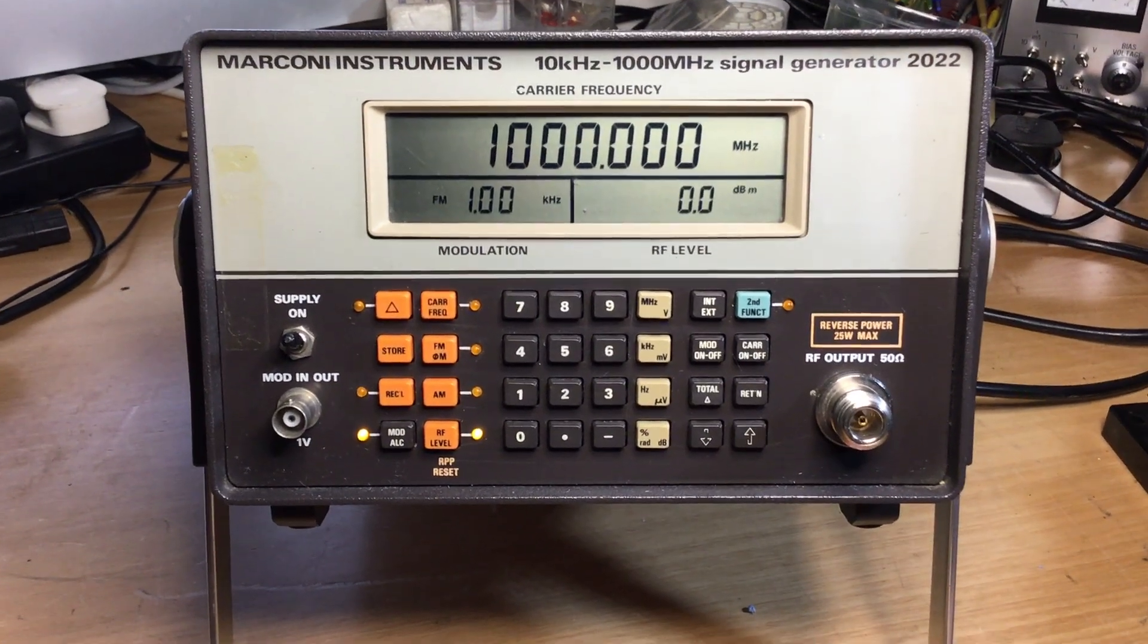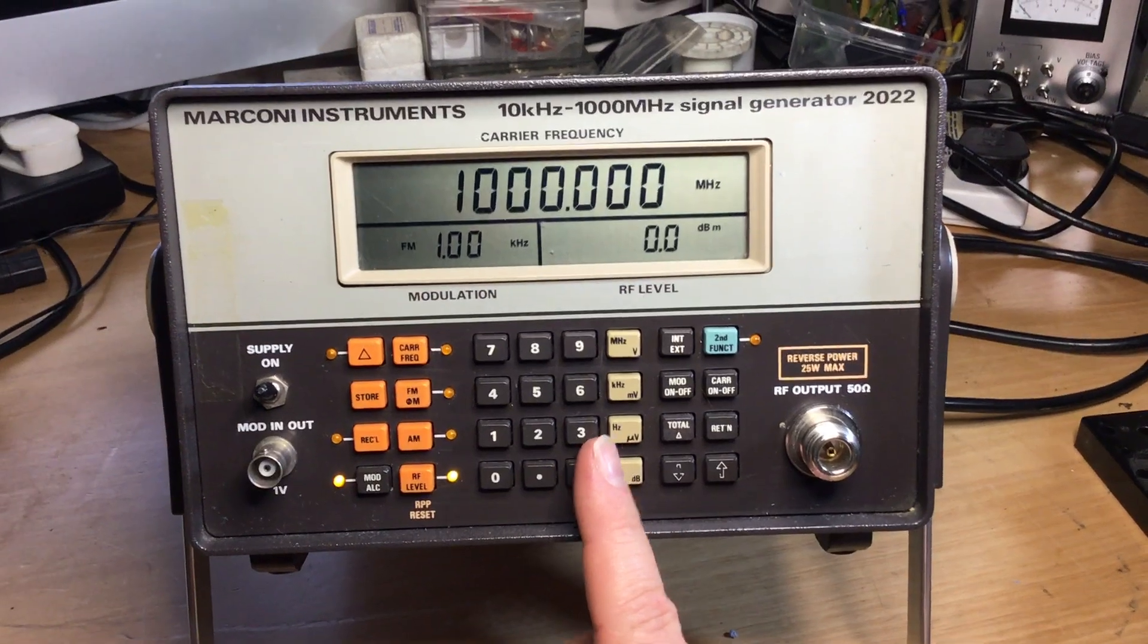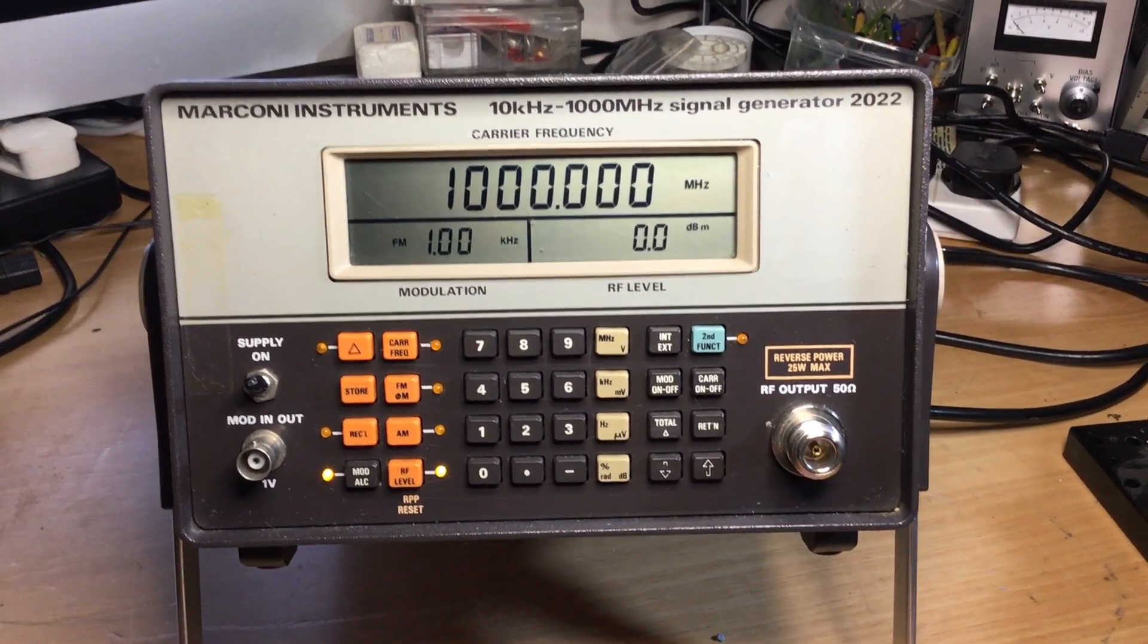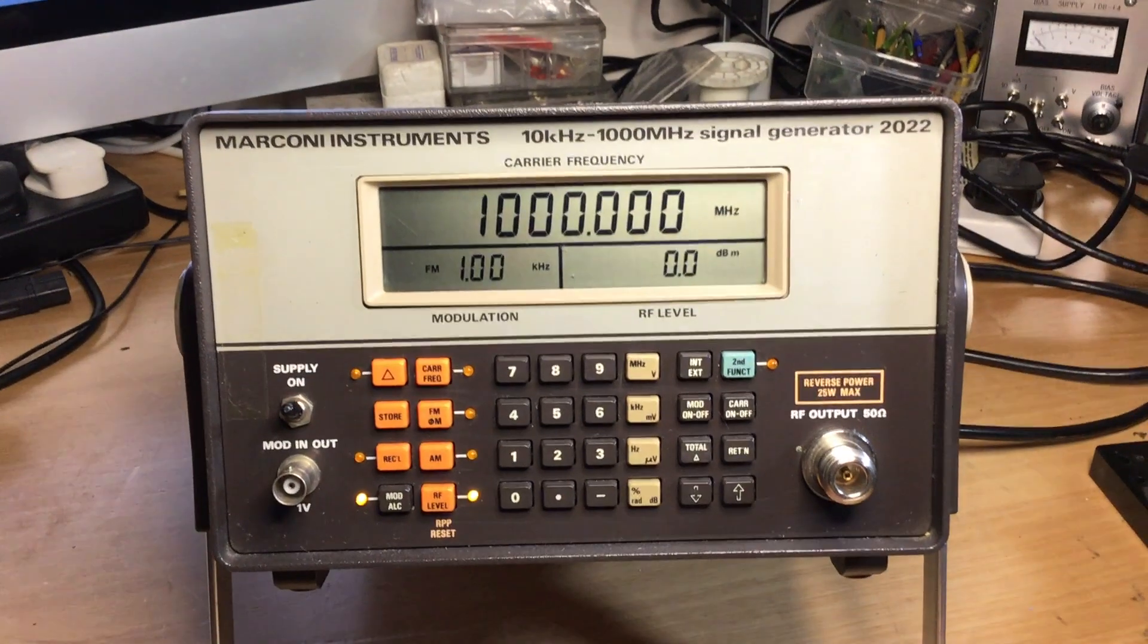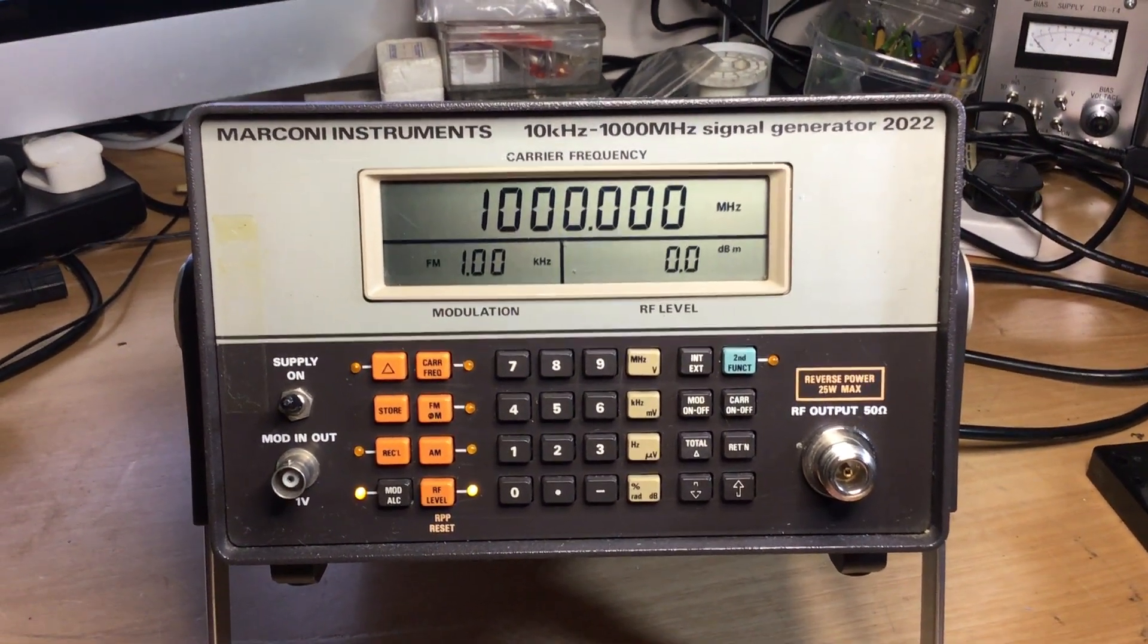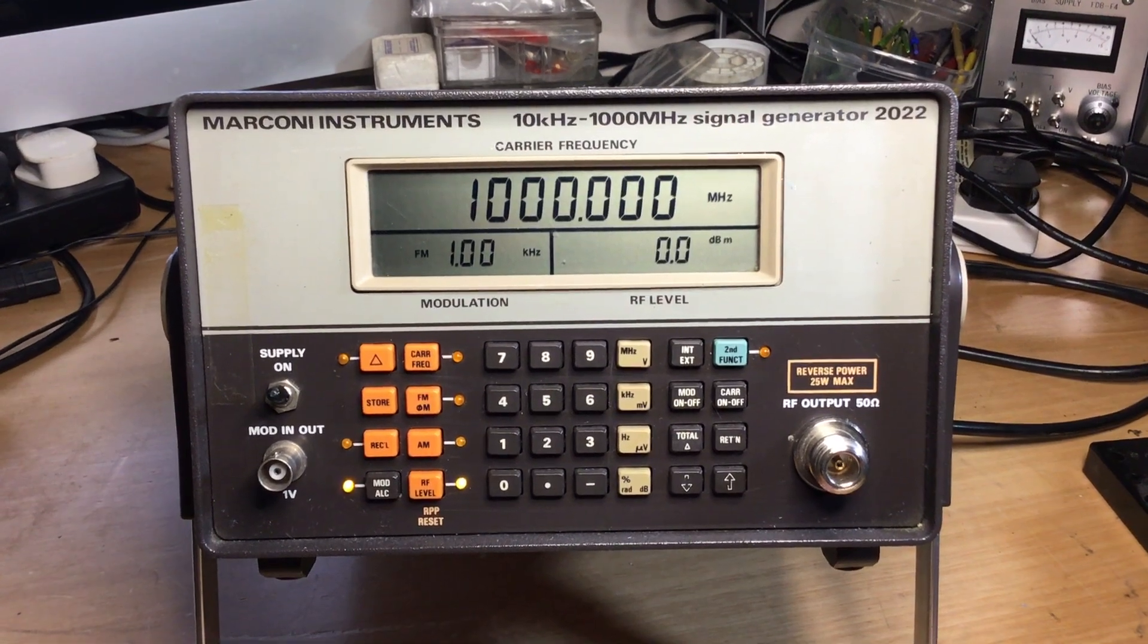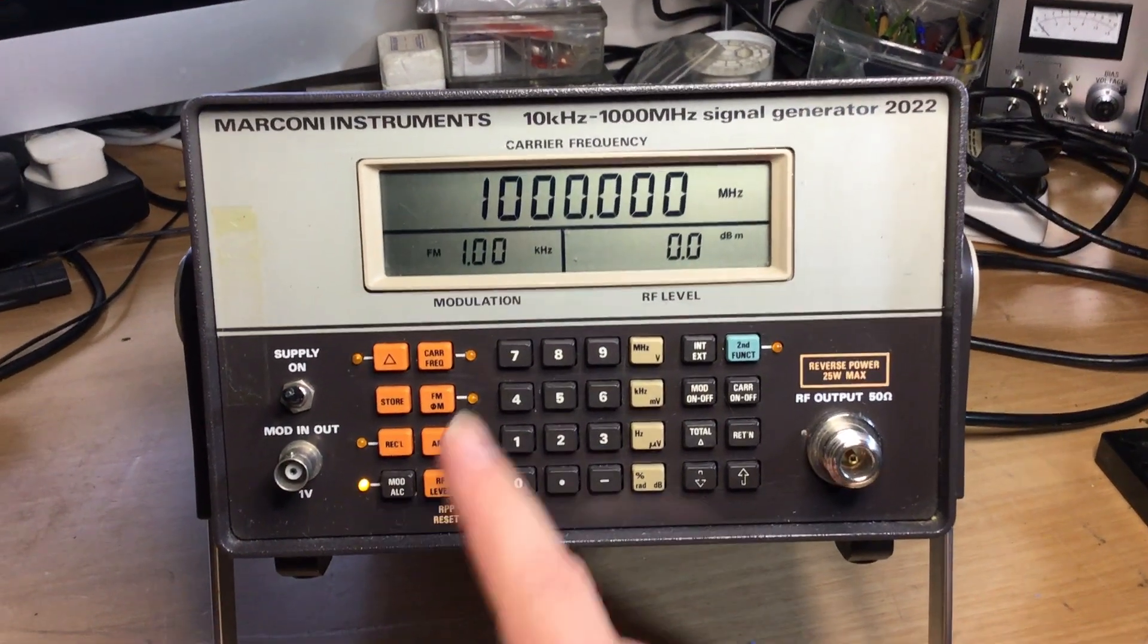The only thing that I'm observant of with some of the smaller Marconi instruments, like the RF millivolt meters, the frequency counters, and indeed this, is the display isn't backlit. And although we can see the display quite clearly in this video, when you've got it in the workshop in high light conditions, as natural light or backlit, you do get quite a bit of glare off the display in certain positions.